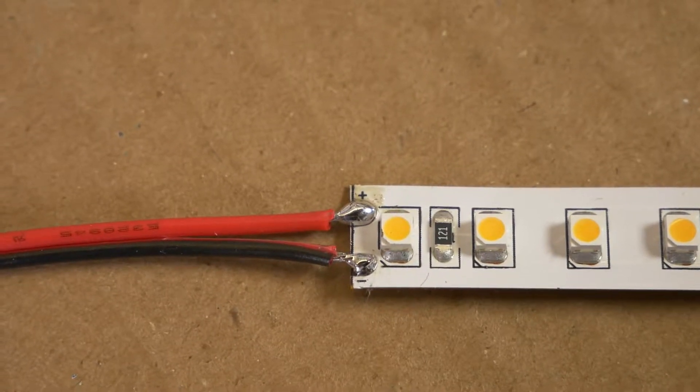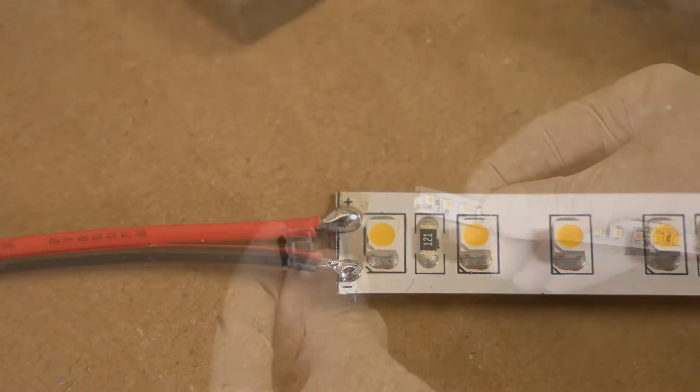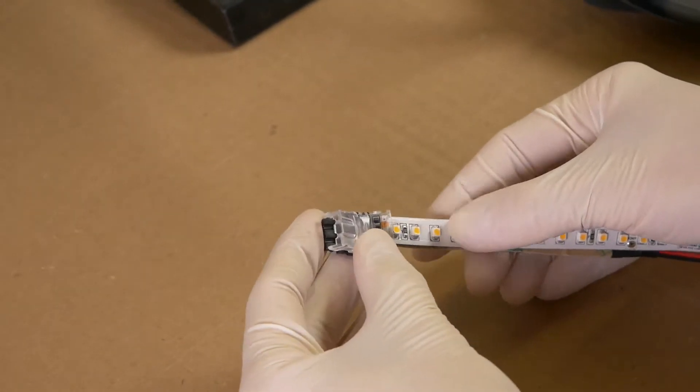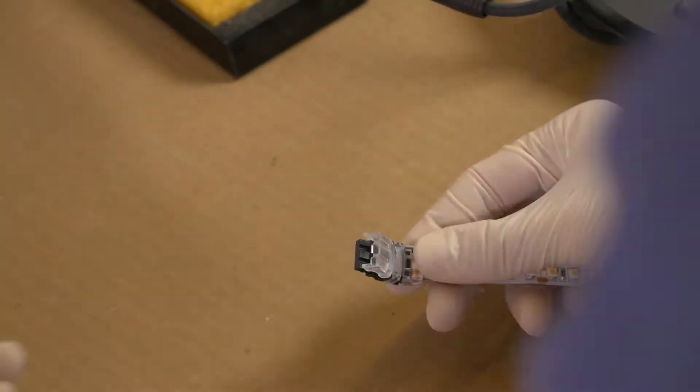The most secure way to attach wires to LED strips is to solder them on. Sure, you can use clips, but a good solder job beats clips any day. So how do you solder?